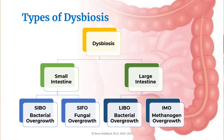Now let's talk about the types of dysbiosis. There are basically five types of dysbiosis, including SIBO, SIFO, LIBO, IMO, and dysbiotic strain imbalances.